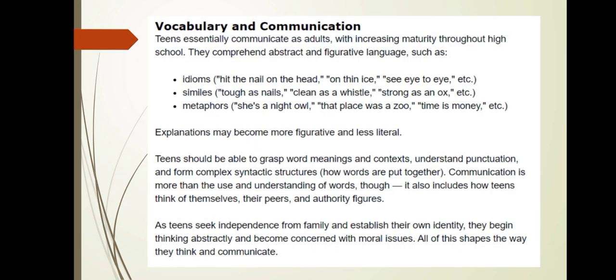Next is vocabulary and communication. Adolescents essentially communicate as adults, with increasing maturity throughout high school. They comprehend abstract and figurative language such as idioms, similes, and metaphors. Their explanations may become more figurative and less literal; they should be able to grasp word meaning and context, understand punctuation, and form complex syntactic structures. Communication is also shaped by how adolescents think of themselves, their peers, and authority figures. As they seek independence from family and establish their own identity, they begin thinking abstractly and become concerned with moral issues — all of which shapes the way they think and communicate.